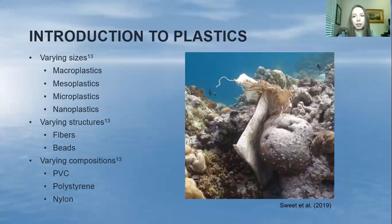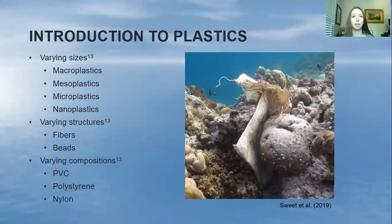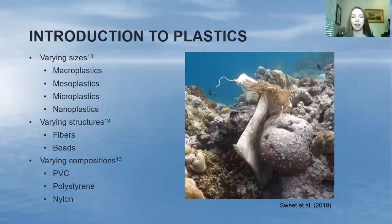To introduce you to plastics, they come in a variety of sizes. Macroplastics are anything 25 millimeters in length or greater. Mesoplastics are anywhere between 5 and 25 millimeters. Microplastics are one-tenth of a micrometer to 5 millimeters. And nanoplastics are anything smaller than microplastics. These plastics come in a variety of structures — the most common for microplastics are fibers and beads — and they are made up of varying compositions, including PVC, polystyrene, nylon, acrylic, PET, and many others.